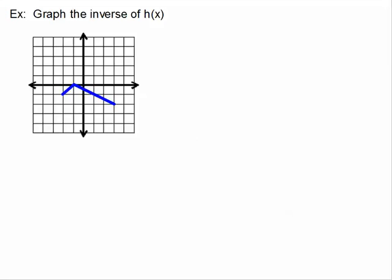Looking at our next graph, I know this blue shape — maybe a hockey stick, I guess that's why we call it h of x. Even though it just starts and stops in a limited range, it does pass the vertical line test. Since I don't have an equation for this blue part, I'll use ordered pairs. I'll find: (-2, -1), (-1, 0), (1, -1), and (3, -2) are on this hockey stick.